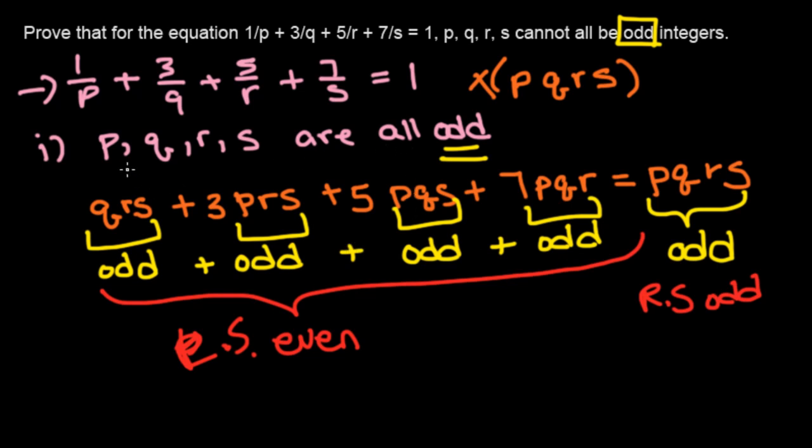So our original claim, which was that p, q, r, s all have odd integer solutions, is false. We proved that they all cannot be odd integers.